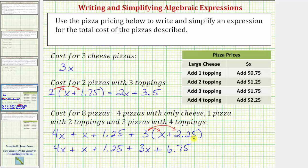And now, we combine like terms. Notice we have one, two, three x terms, and two constants. If it's helpful, the coefficient of this x is 1. We have 4x plus 1x, that's 5x. 5x plus 3x is 8x. And then we have 1.25 plus 6.75, which is equal to 8. So 8x plus 8 represents the cost of the eight pizzas, where we have four cheese pizzas, one two-topping pizza, and three pizzas with four toppings.